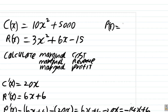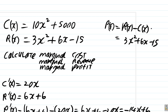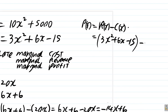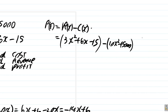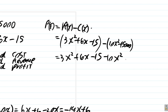The total profit is the total revenue minus the total cost. The revenue is 3x squared plus 6x minus 15, minus the cost which is 10x squared plus 5000. Distributing the negative: 3x squared plus 6x minus 15 minus 10x squared minus 5000.